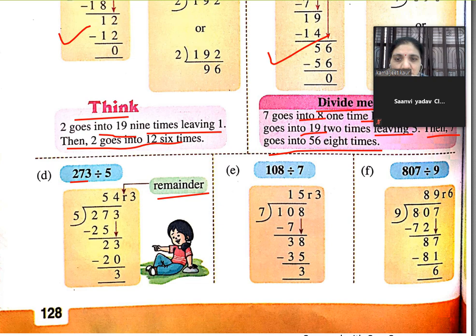273 divided by 5. 5 5s are 25, how much is left? 2. Bring down 3. 5 4s are 20, how much remainder is left? 3. We can write 3 here.